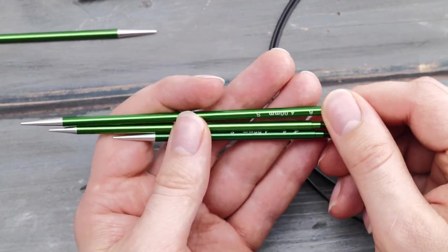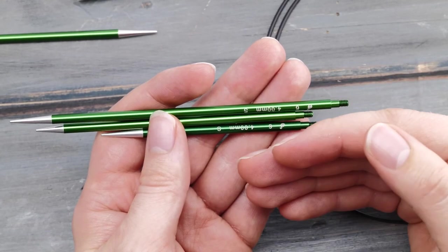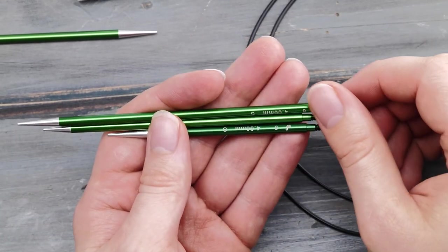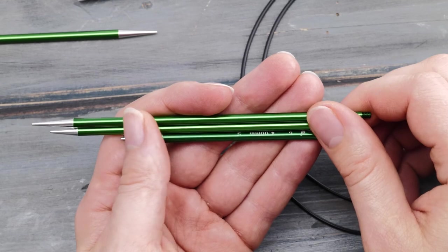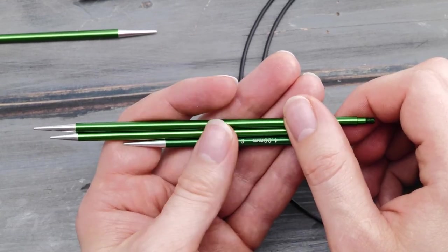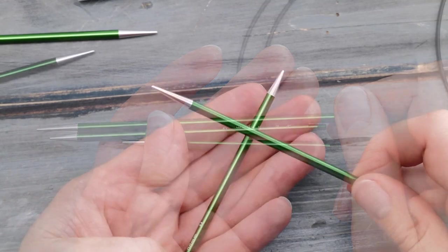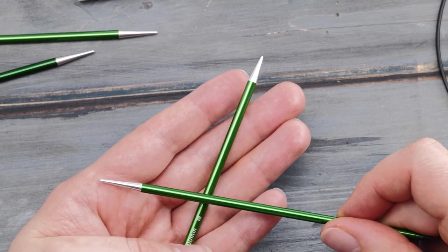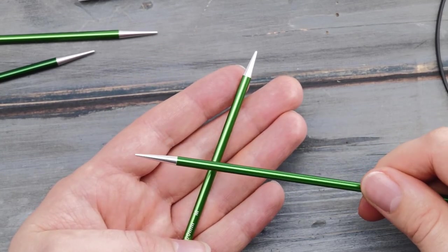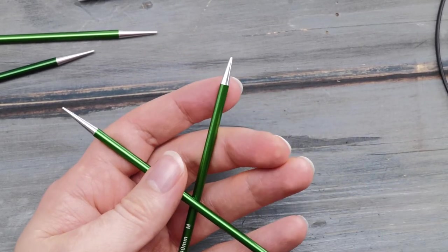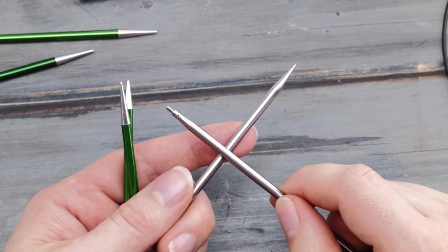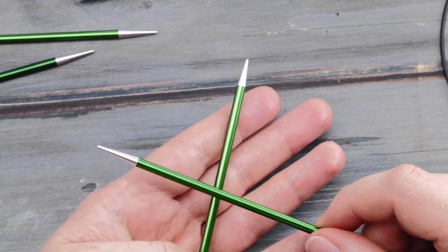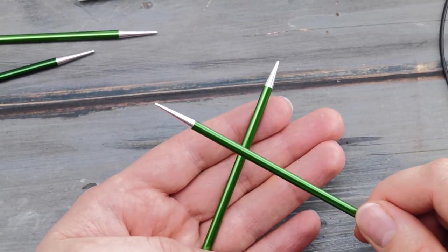This is one step below say the Knitter's Pride Nova Platina or the Addi Rockets, which are coated all the way through and super slick. This is a tiny little bit less slick. Still, these circles also create a very noticeable noise. So when you glide them across each other, that's something you notice. You will also notice this with stainless steel needles. But it is less intrusive. Here it is a very distinct noise.